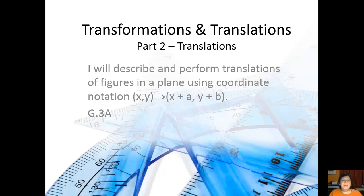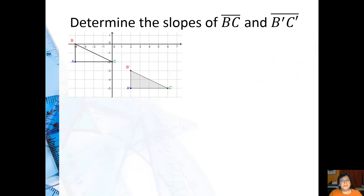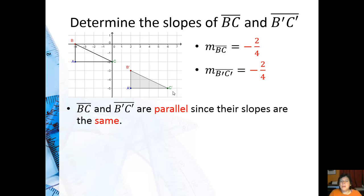Now we're going to take a look at some of the slopes on the translation that we were looking at before, the slopes of BC and B'C'. Well, the slope from B to C, which is right here, that's negative 2 over 4. And the slope from B' to C' we go down 2 over 4, that's also negative 2 over 4. That means these two segments are parallel, since their slopes are the same.